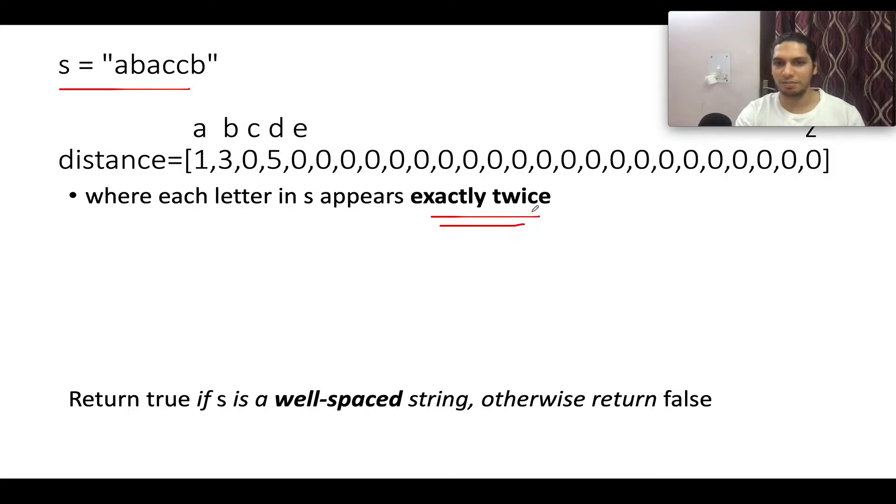This is a very important statement that all characters will appear exactly two times in the input string. We are also given the distance array and what does this distance array signify?